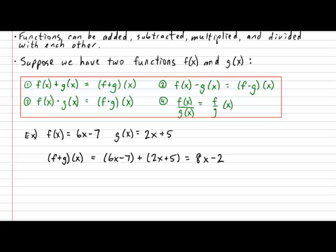Let's take a look at subtraction. Suppose I ask you, what is the rule for f subtract g of x? Well, in this case, we have 6x minus 7 subtract. And watch out, you need brackets here because g of x is a polynomial. 2x plus 5. And when you complete the operation, you get 4x minus 12.